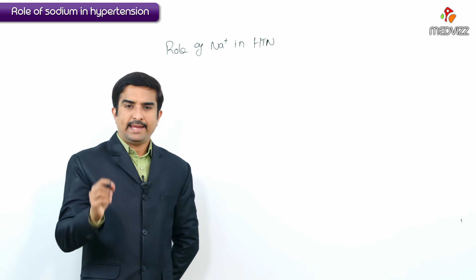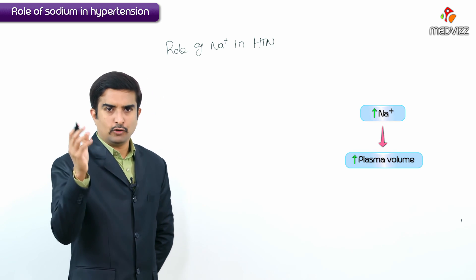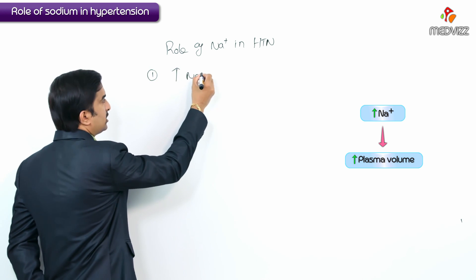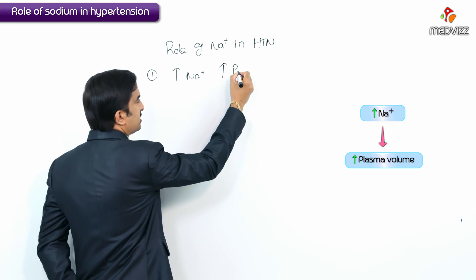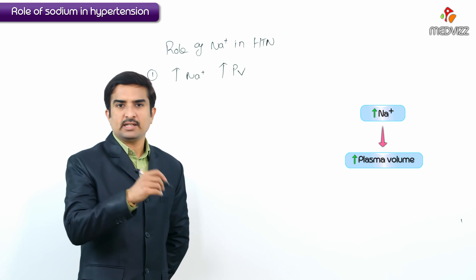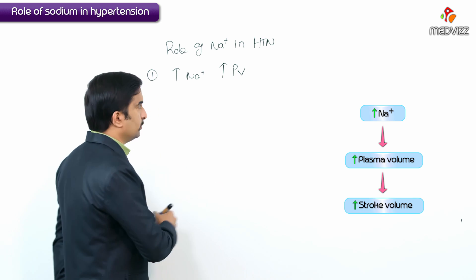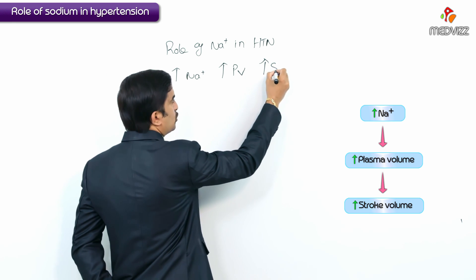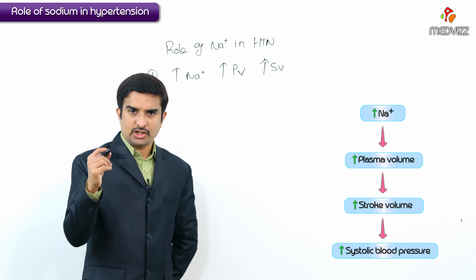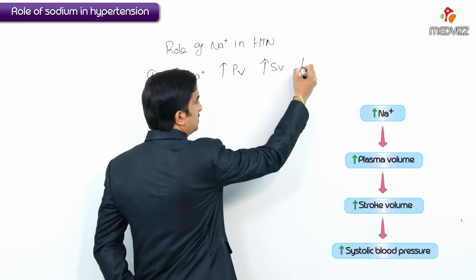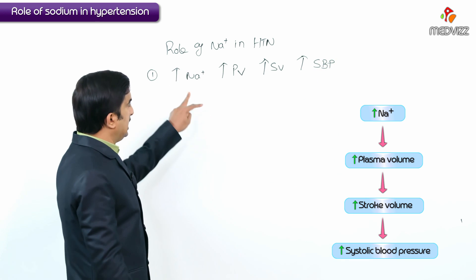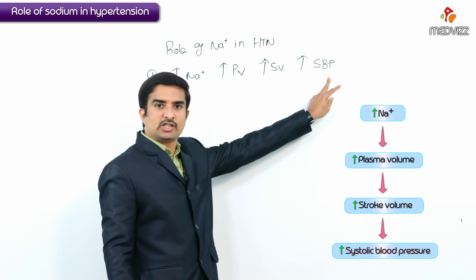Remember that excess sodium increases plasma volume. Increase in plasma volume increases stroke volume, and increase in stroke volume in turn increases the systolic blood pressure. So what you need to know is: increase in sodium increases systolic blood pressure.